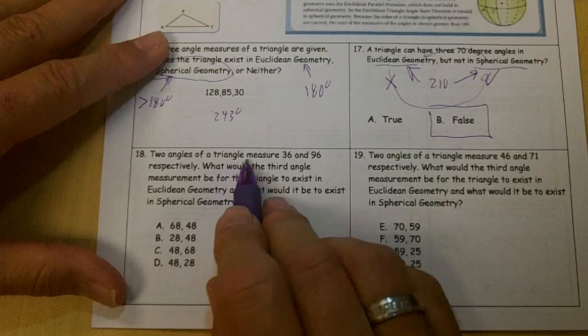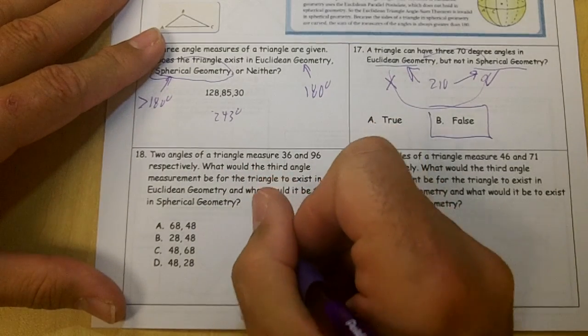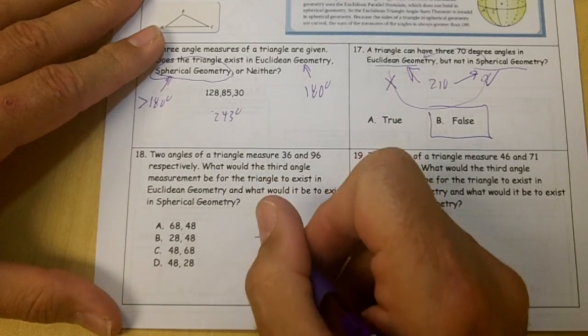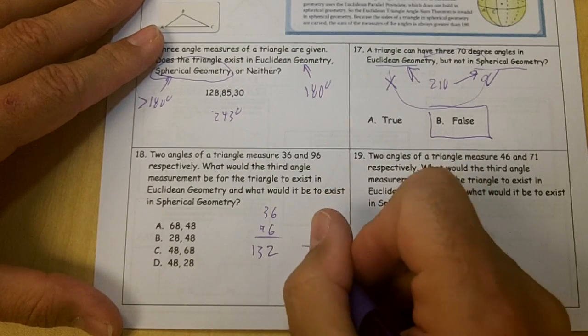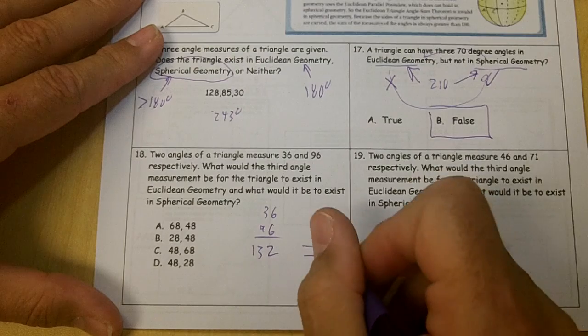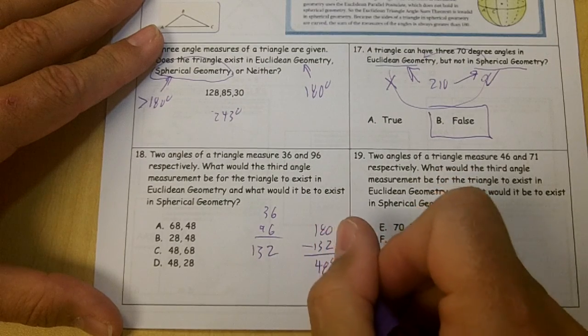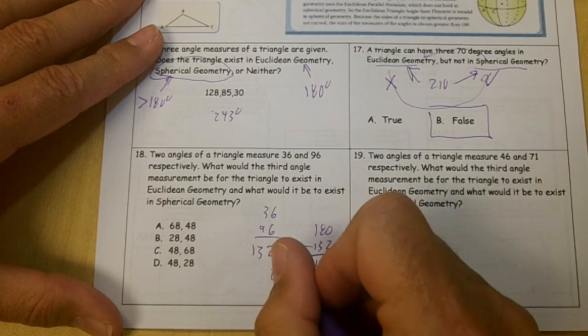Number 18, two angles of a triangle measure 36 and 96. So if you add those up, you get 132. And then if you subtract that from 180, you get 48. So 48 would be Euclidean, wouldn't it?